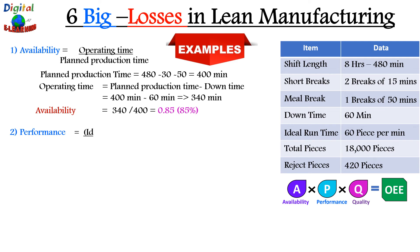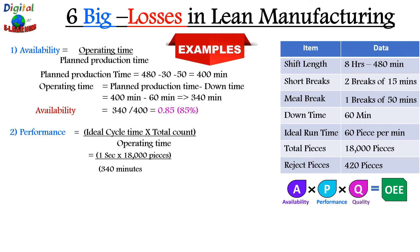The next loss is calculated in terms of performance. Performance = ideal cycle time × total count ÷ operating time. Ideal cycle time is 60 pieces per minute (one piece per second), total count is 18,000 pieces, and operating time is 340 minutes. This gives performance of approximately 88.23%, meaning about 12% is your performance loss — the machine is running slow or not producing a sufficient number of parts.